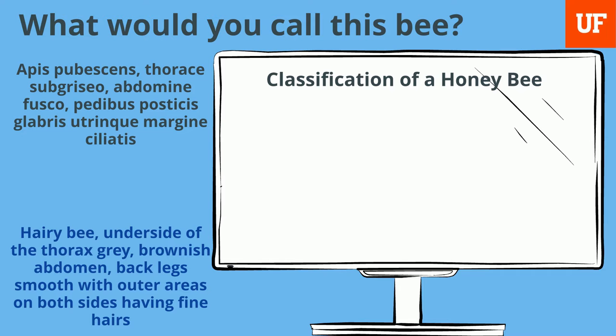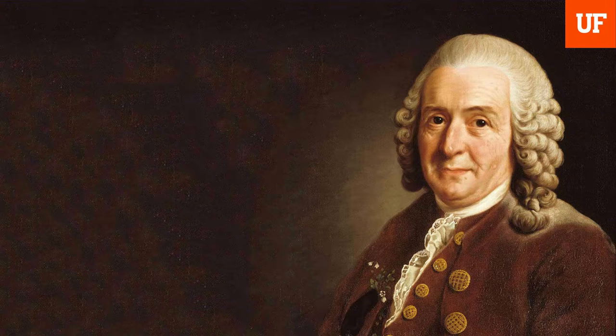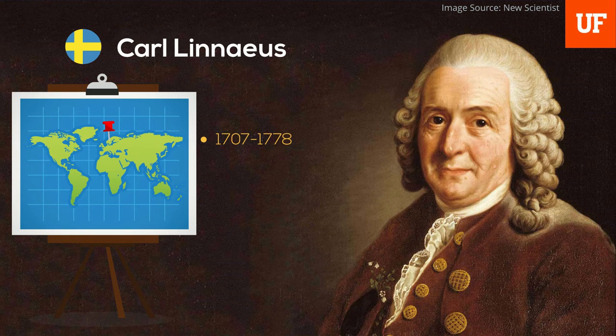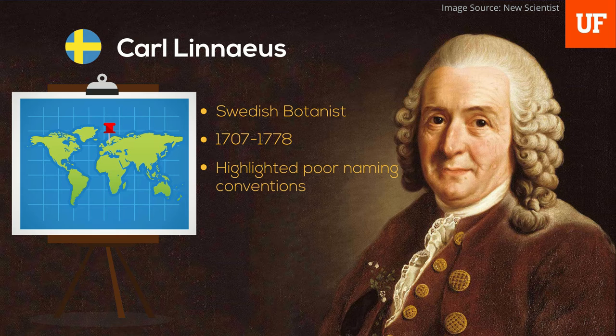Thanks to Carl Linnaeus, the European honeybee is now known as Apis mellifera — the honey-wearing bee. Carl Linnaeus was a Swede, born in 1707, and early in his career as a botanist, he realised that the botanical nomenclature of 18th century Europe was pretty poor. New plants and animals were continually being discovered in Europe, with many more coming from the New World, and Linnaeus saw that eventually naming conventions were going to collapse.